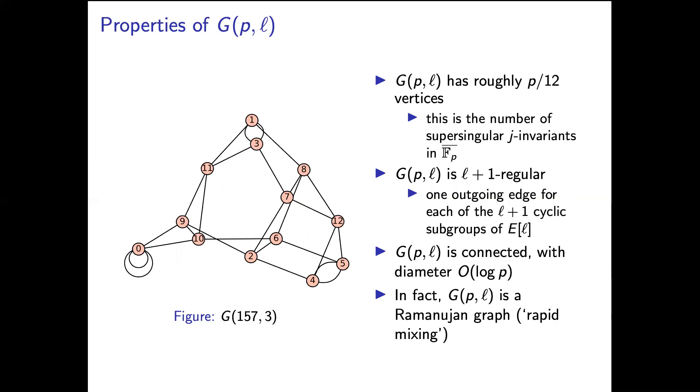What we'll need is the fact that a random walk will land in a set with probability proportional to the size of that set divided by the size of the graph.